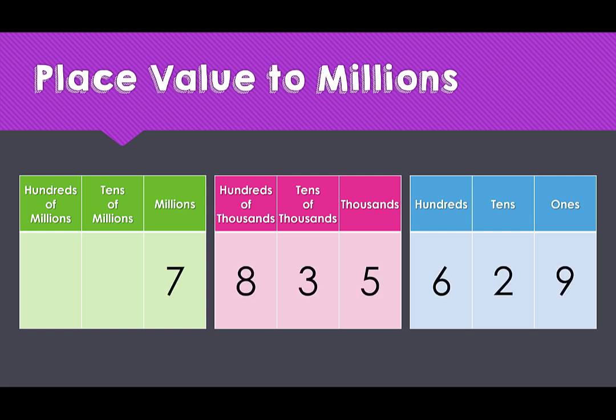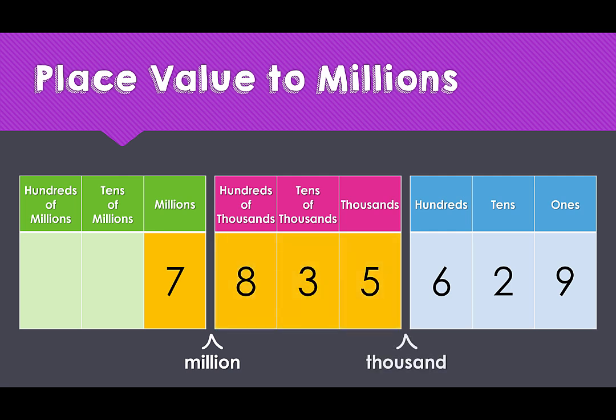How would you read this number? Well, here we have a seven in the millions column, so we would say seven million. Then we have our next group of three digits in the thousands set, so we would read this as the three-digit number eight hundred and thirty-five thousand, because it's the thousands set.